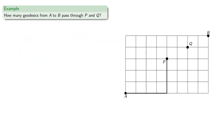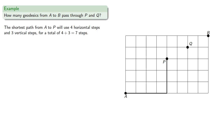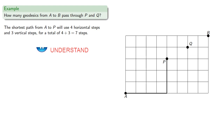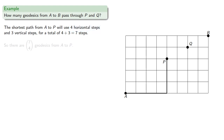The shortest path from A to P will use four horizontal steps and three vertical steps for a total of seven steps. And since four of those need to be horizontal, there are seven choose four geodesics from A to P.